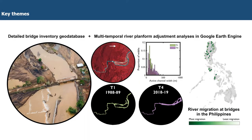The key themes of today involve building a detailed bridge inventory geodatabase and supplementing it with multi-temporal river planform adjustments. You can see an example here of the Karakai bridge on Biliran Island, which was heavily damaged during Typhoon Urduja in 2017. We'll show how this low-cost remote sensing technique using the Landsat series can be used to look at changes in channel planform over multiple timescales, then produce an assessment of river migration at bridges in the Philippines at the national scale.